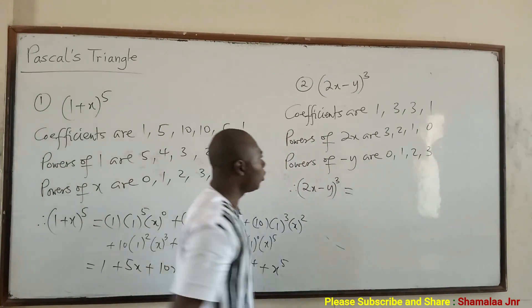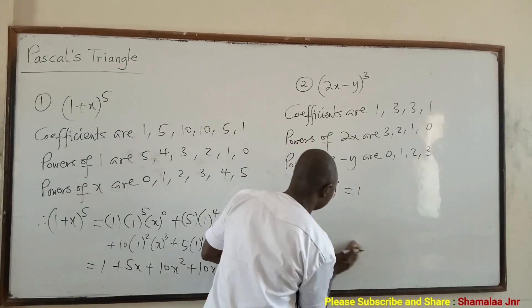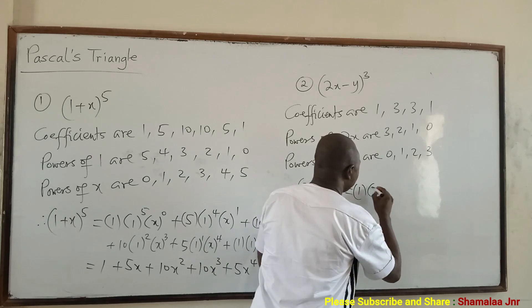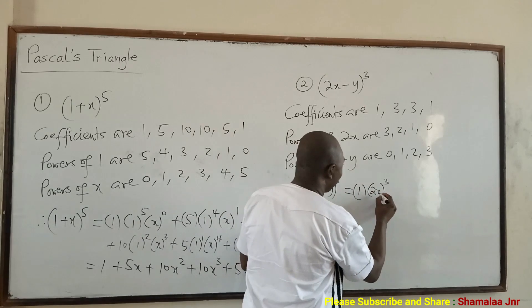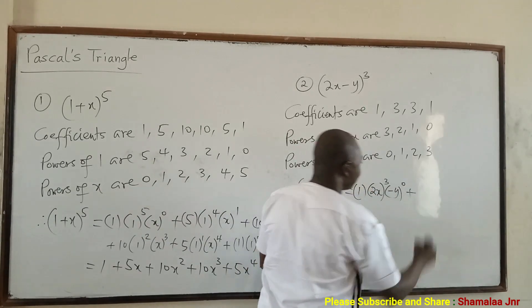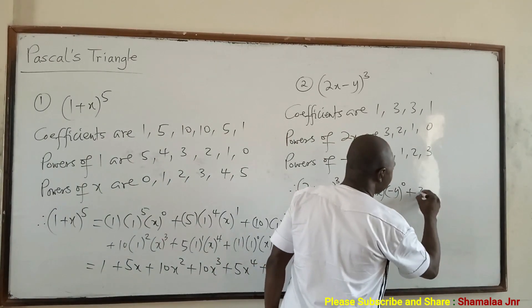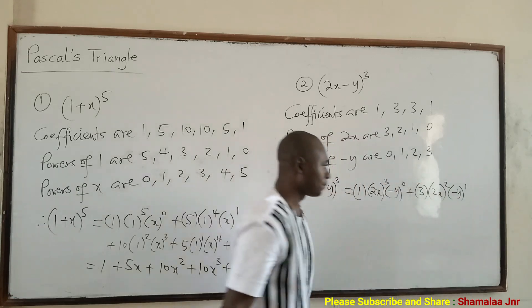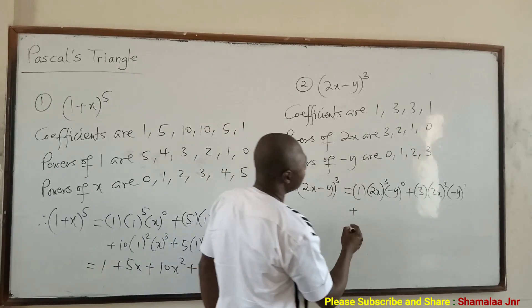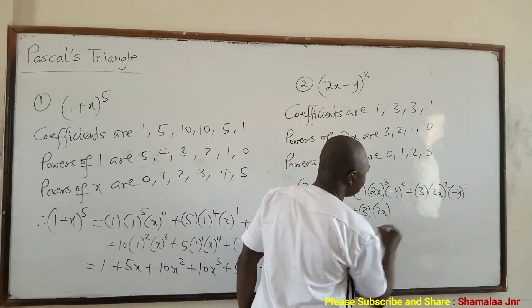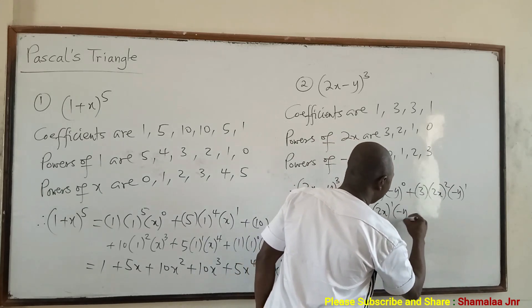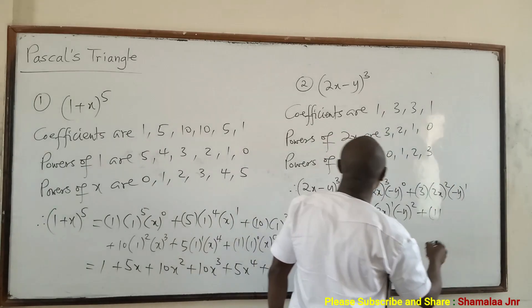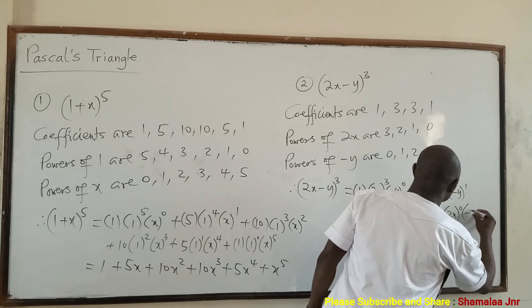So (2x − y) all raised to the power 3 is equal to: first term — coefficient 1, (2x) raised to the power 3, and (−y) raised to the power 0. Second term — coefficient 3, (2x) raised to the power 2, and (−y) raised to the power 1. Third term — coefficient 3, (2x) raised to the power 1, and (−y) raised to the power 2. Last term — coefficient 1, (2x) raised to the power 0, and (−y) raised to the power 3.